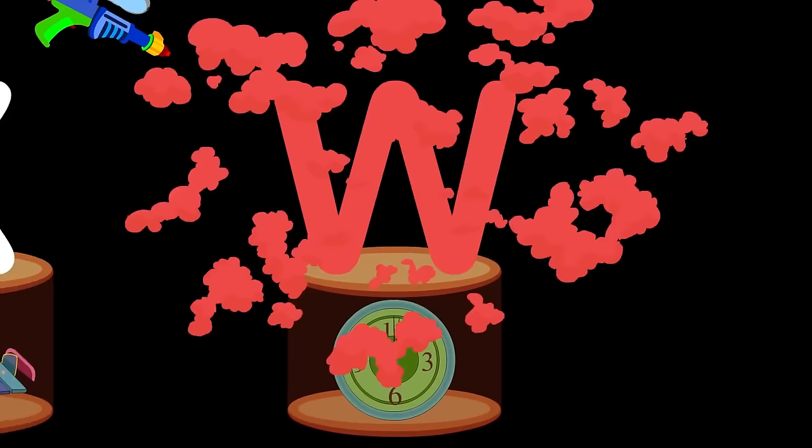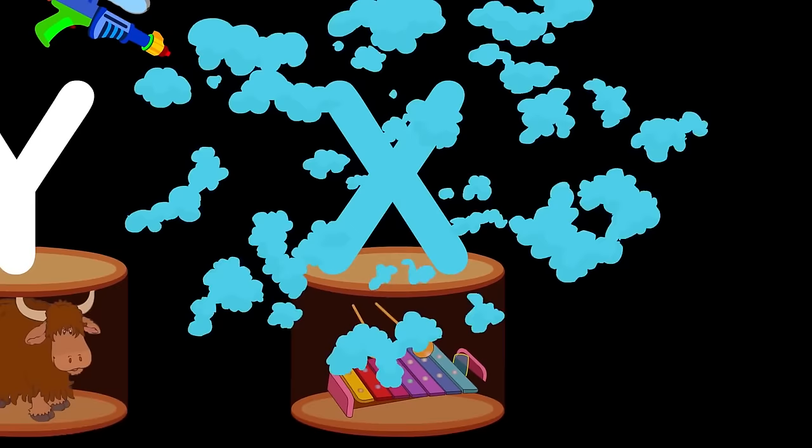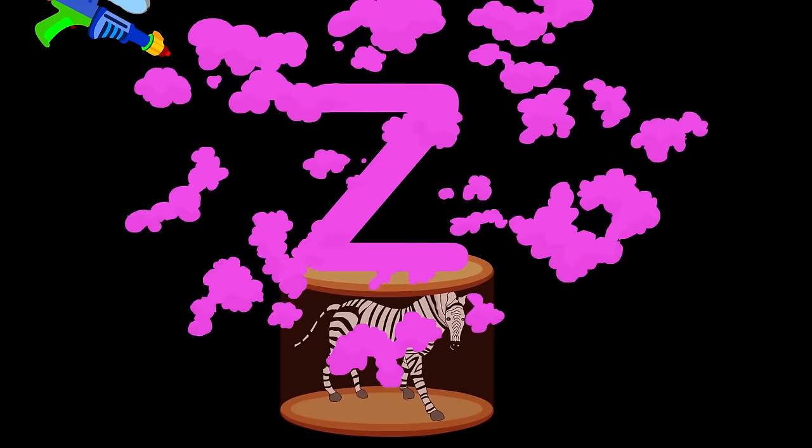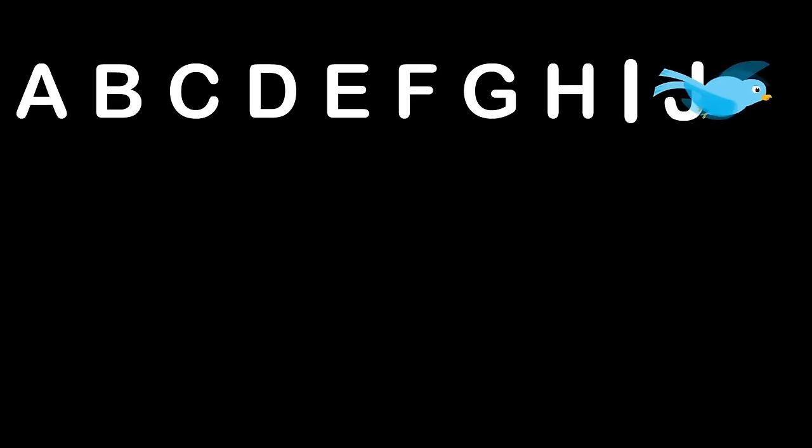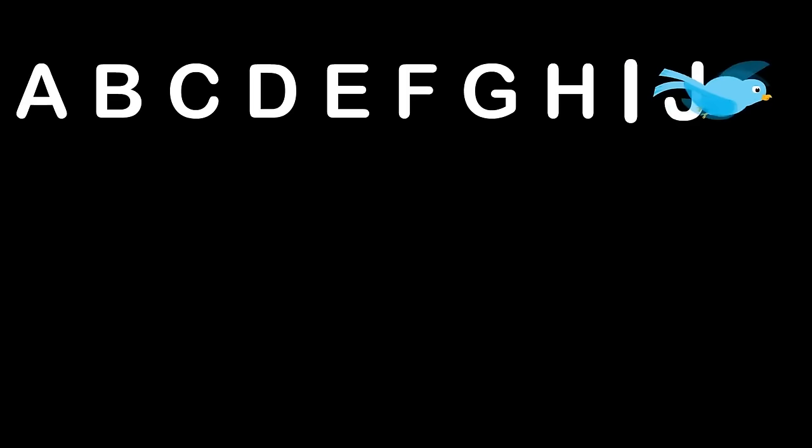U for umbrella, uh-uh-umbrella. V for violin, v-v-v. W for watch, w-w-w-watch. X for xylophone. Y for yellow, d-d-d. Z for zebra, z-z-zebra. This is the phonic song, come sing with me. This is the phonic song, come sing with me.